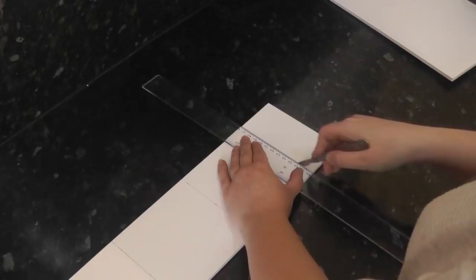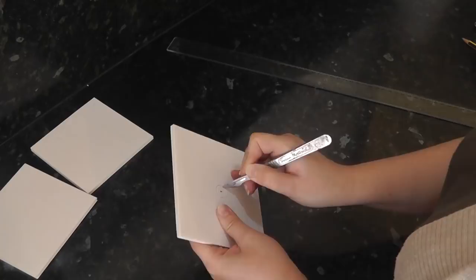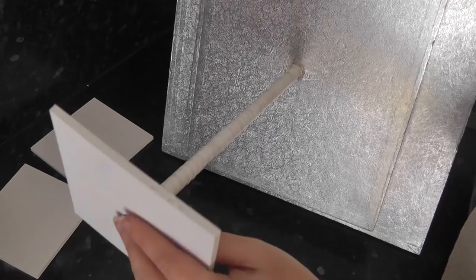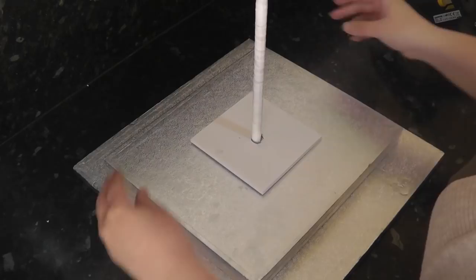Mark the centres of the squares and cut out a hole with the scalpel, big enough to slot over the dowel. Hot glue around the base of the dowel and slip your first square into position.